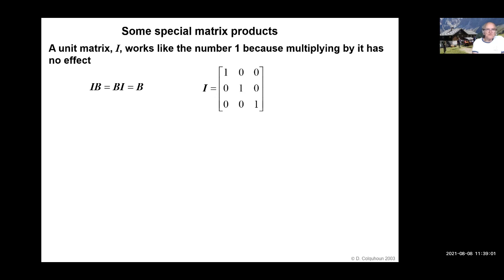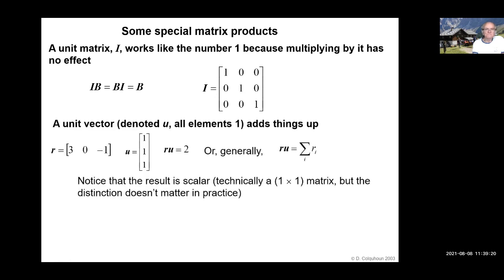So back to some special matrix products. A unit matrix I works like the number one because multiplying by it has no effect. In fact, in this case, the order doesn't matter: I times B is the same as B times I; they're both equal to B. Just do an example if you want to convince yourself.